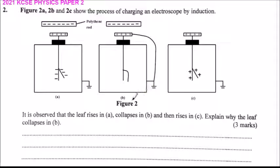In figure B, the plate is earthed, then the rod and the earth are removed. We find that the electroscope has been charged positively, both the plate and the leaf. It is observed that the leaf rises in A, collapses in B, and then rises in C. Explain why the leaf collapses in B.